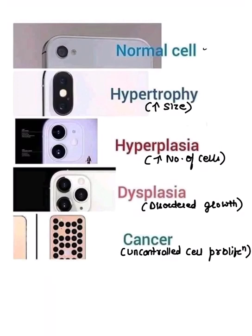Let me explain adaptation with an example using a camera. If there is an increase in the size of a camera, that is hypertrophy. If there is an increase in number, that is hyperplasia. When there is disordered growth — it did not grow in a straight line but moved to another side — that is dysplasia, but it's still reversible. If there is uncontrolled proliferation, that is basically cancer.